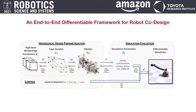By combining our deformation-based morphology parameterization and the simulation together, we obtain an end-to-end framework. The differentiability of each step allows us to effectively backpropagate the gradient of the loss through the whole pipeline to the morphology and control parameters. Then, we can use efficient gradient-based optimization for co-design.